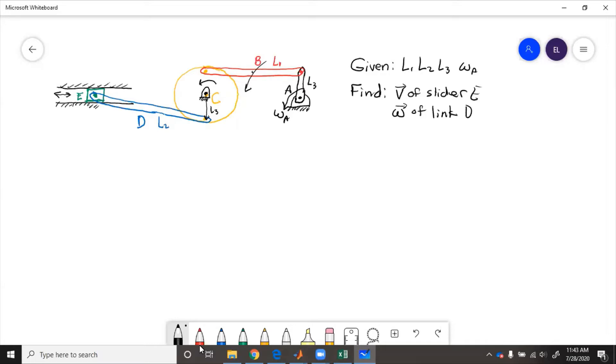Well, so we learned before, if we have point here B, point here A, we know that VB equals VA plus VB with respect to A, but for fixed axis rotation, VB just equals VB with respect to A, because A is not moving, so this is omega cross RB with respect to A.